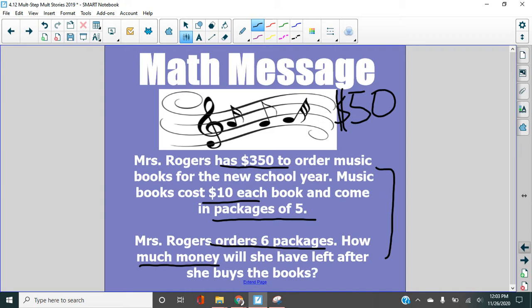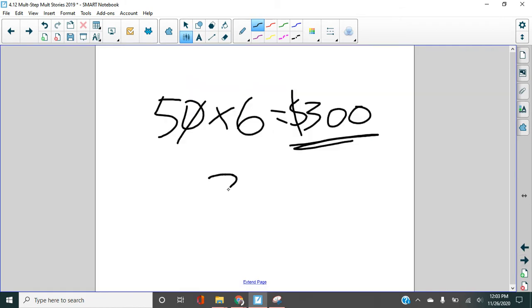Is that the final answer? No, it's not, right? Because if you remember, we said at the beginning that we want to know how much money she has at the end. So she started with $350. Then she spent $300. She has $50. That's our label remaining at the end.